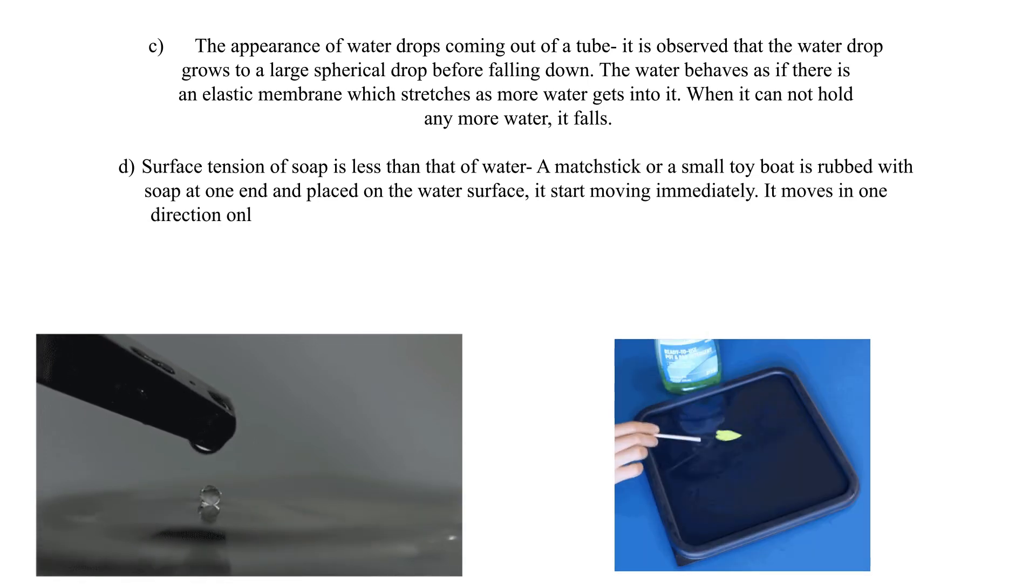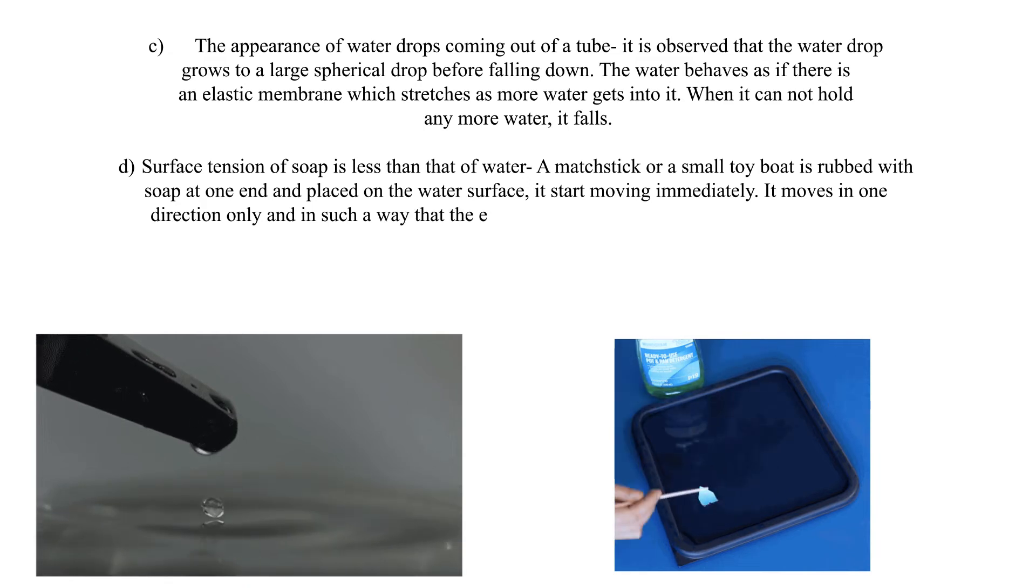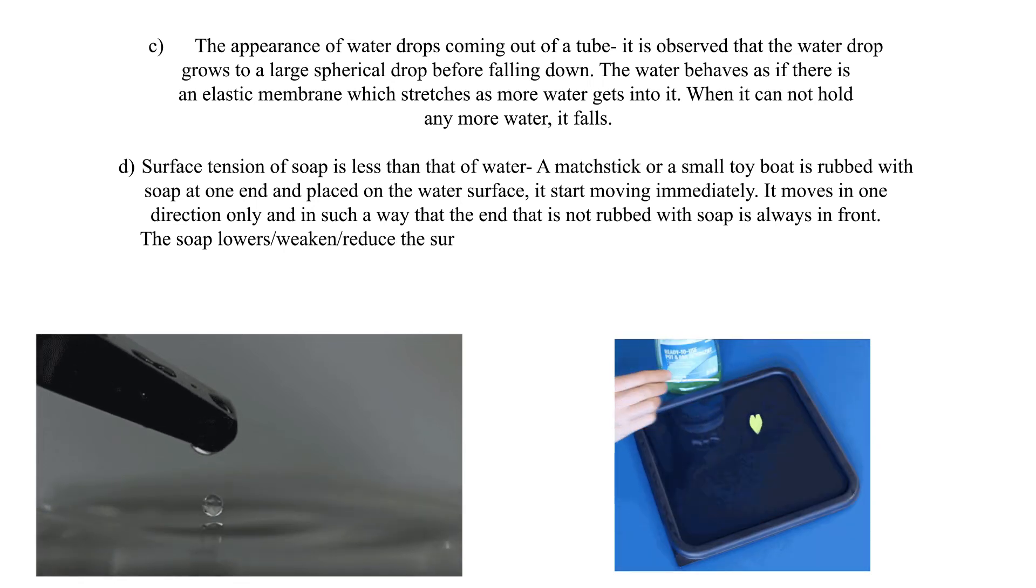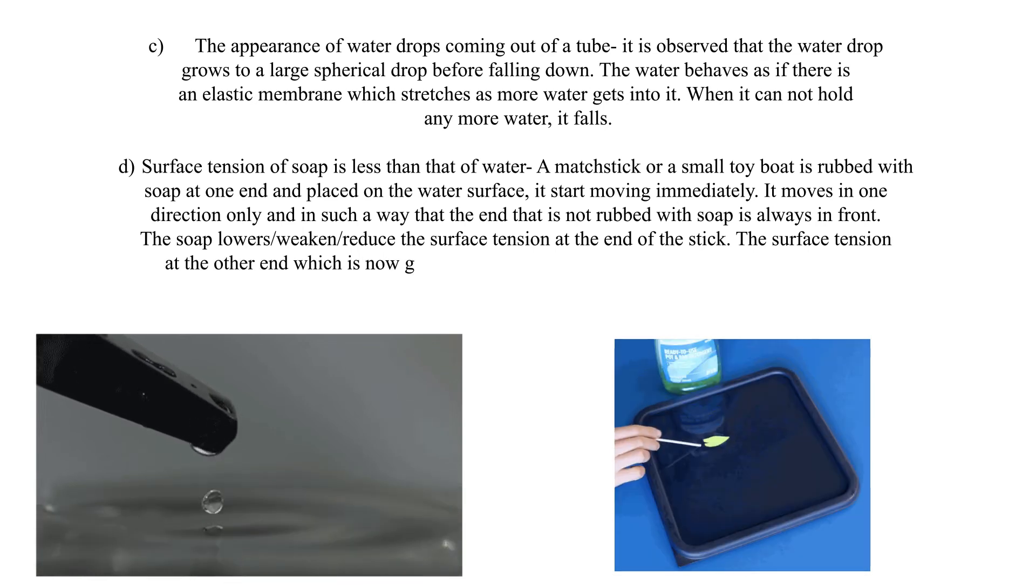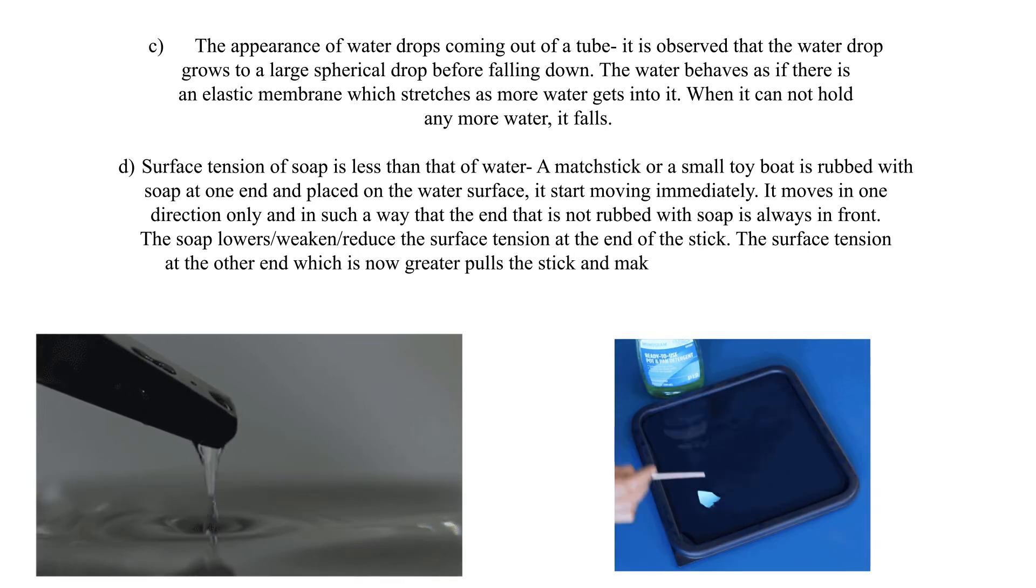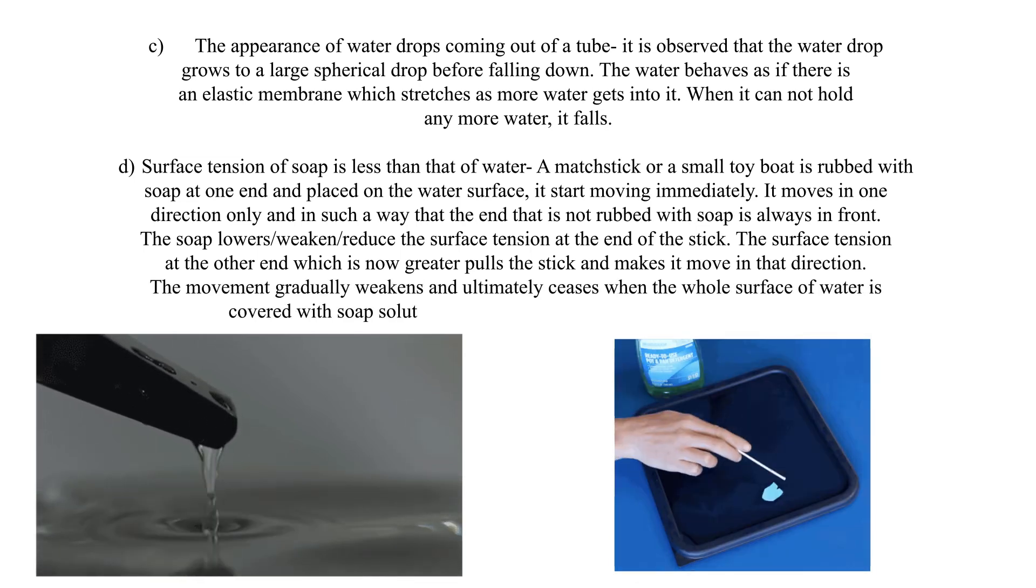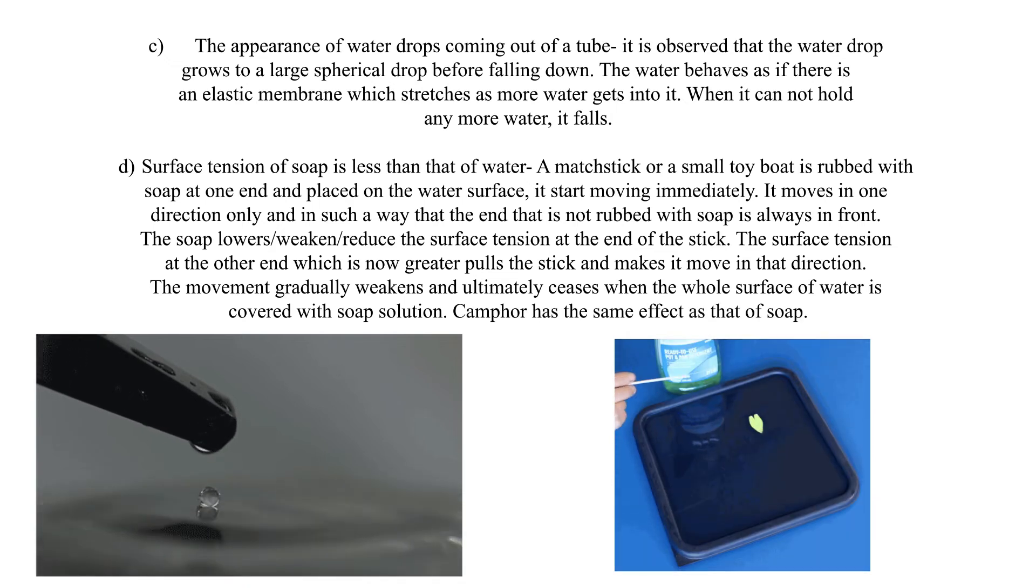It moves in one direction only, and in such a way that the end that is not rubbed with soap is always in front. The soap lowers the surface tension at the end of the stick. The surface tension at the other end, which is now greater, pulls the stick and makes it move in that direction. The movement gradually weakens and ultimately ceases when the whole surface of water is covered with soap solution. Camphor has the same effect as that of soap.